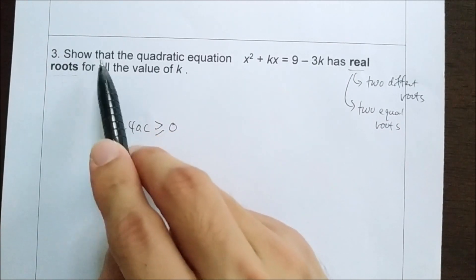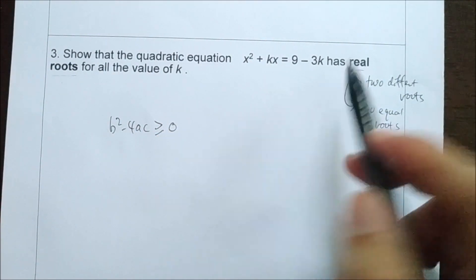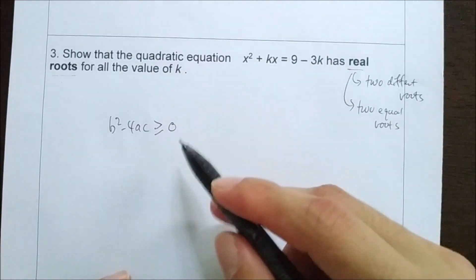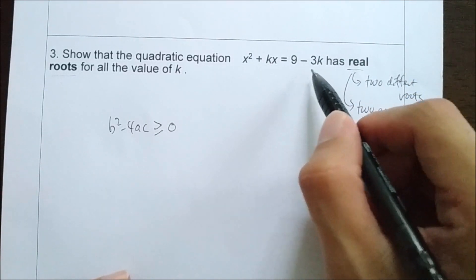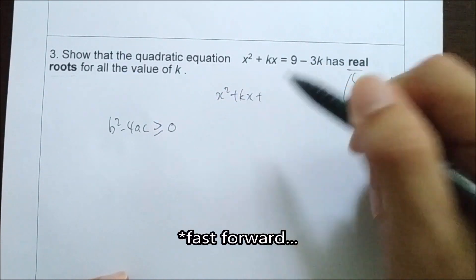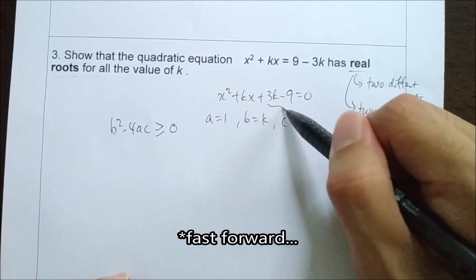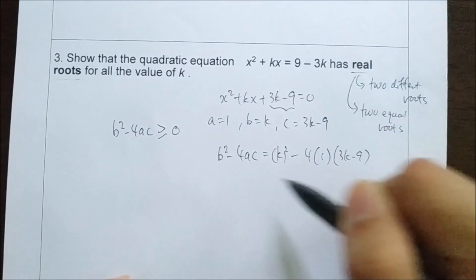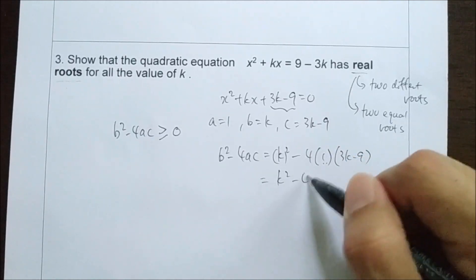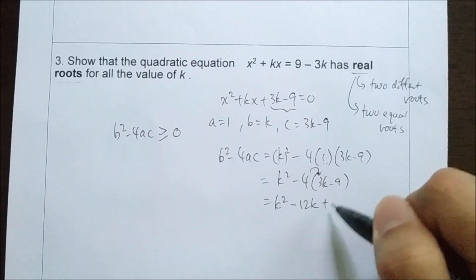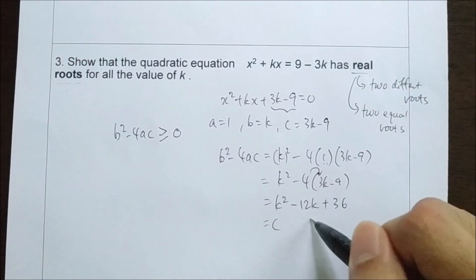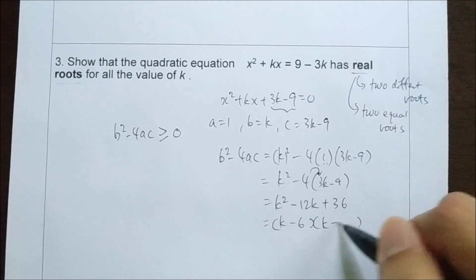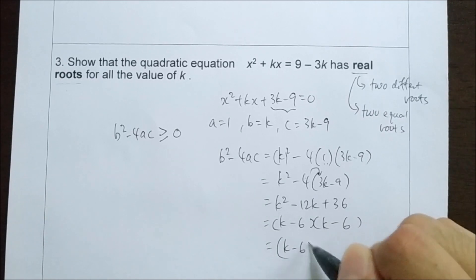Since the question says to show that this equation has real roots, we want to show that the values we get are greater than or equals to 0. First, rewrite this in general form. If we factorize the discriminant expression, we get k, k, negative 6, negative 6, which is actually k minus 6 all squared.